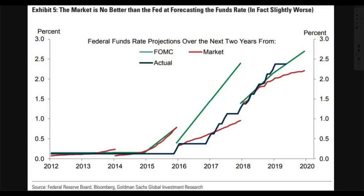The market is no better than the Fed at forecasting the Fed funds rate — in fact, it's slightly worse. The green line is the FOMC and their predictions, the red line is the market, and the blue line is the actual rate. You can see the little steps up that they took with the actual Fed funds rate compared to how these others really see it. Here we are in 2019, still unable to get rates back to a normal level and unable to get quantitative easing down to a normal level.